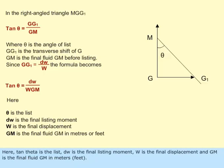Here, tan theta is the list, DW is the final listing moment, W is the final displacement, and GM is the final fluid GM in meters or feet.